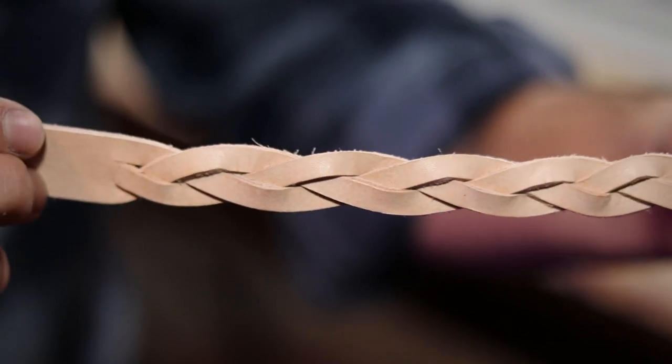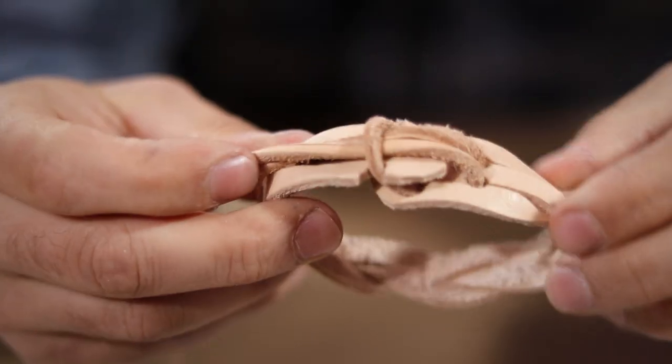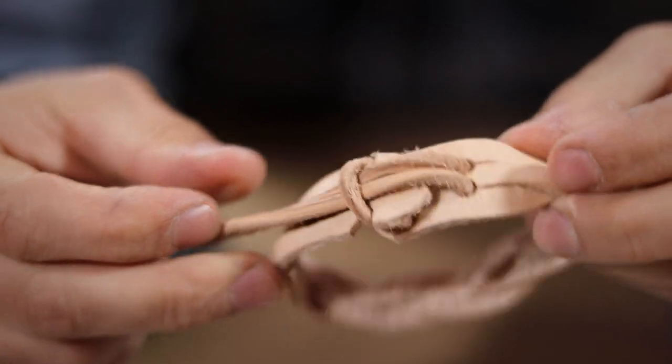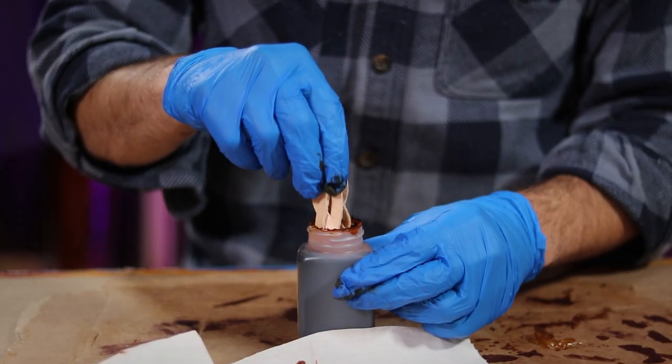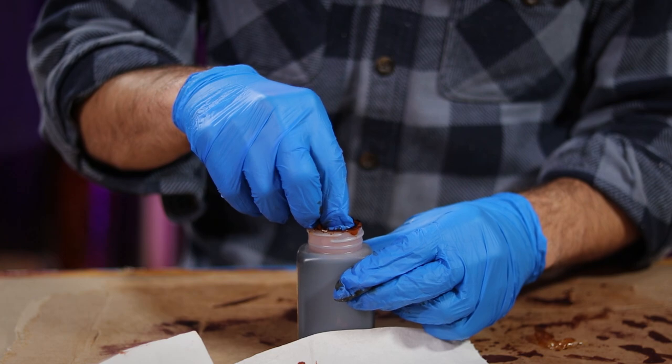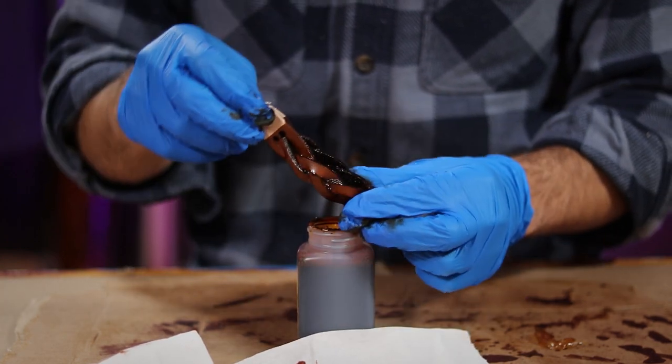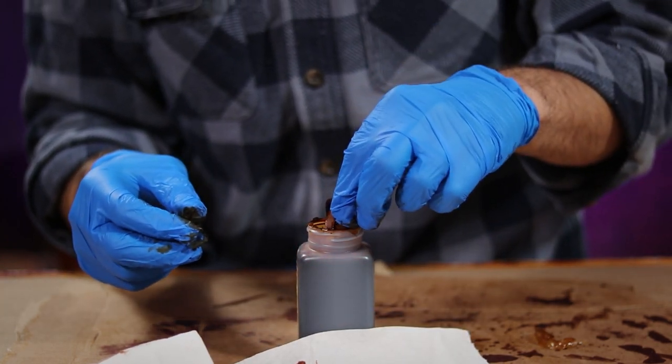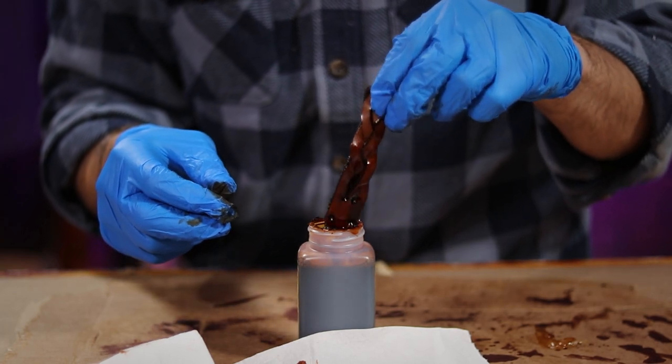Now all you're going to need to do is add a closure of some sort. I just used some simple cordage, but you can use snaps or clips or whatever you like. For a little bit of a finishing touch, I just dip dyed the whole thing in a nice saddle tan, though I would recommend dying it before weaving just to ensure a more even job.